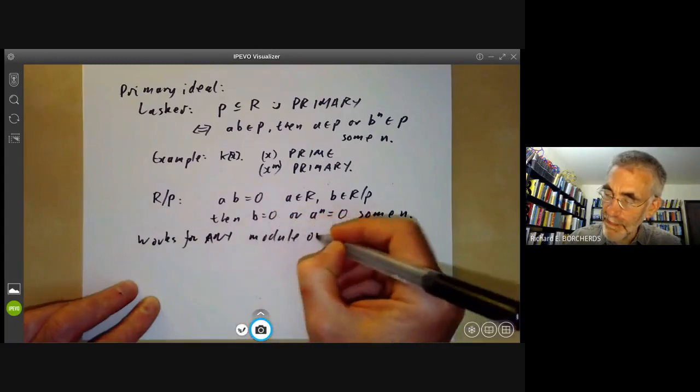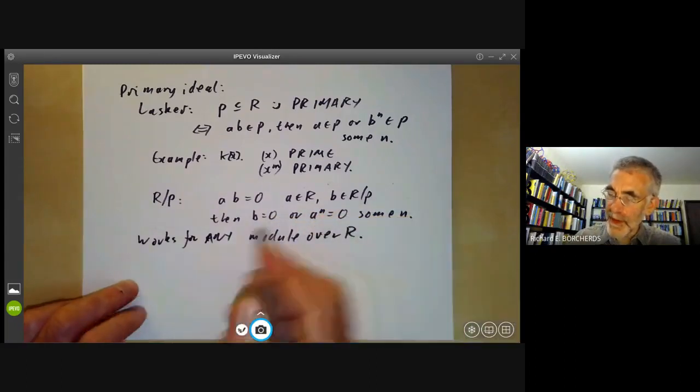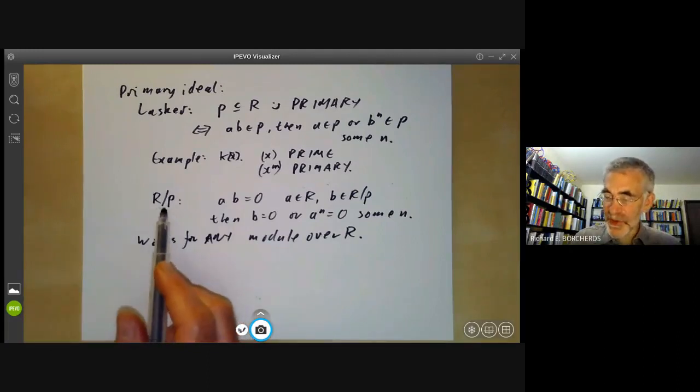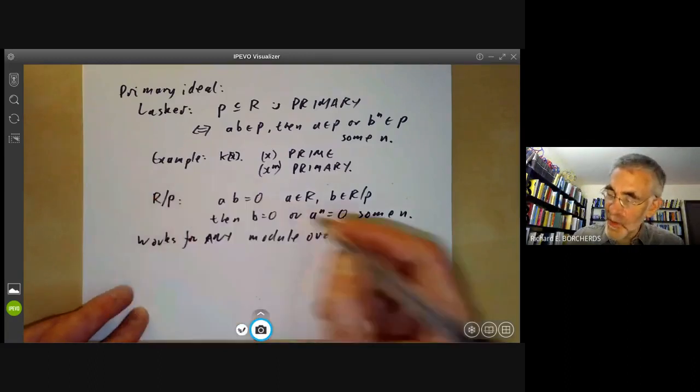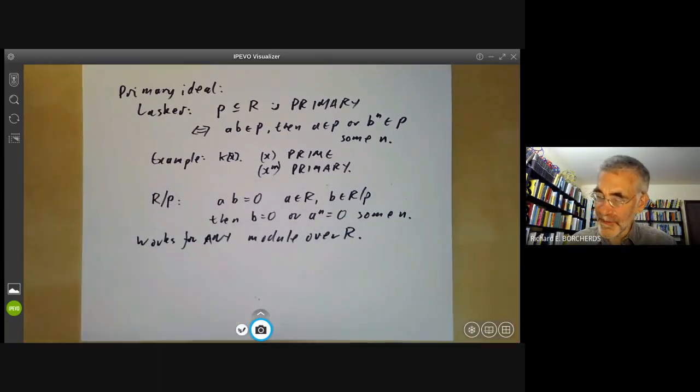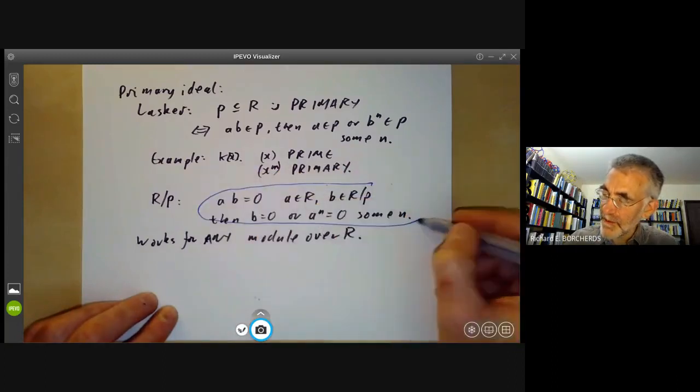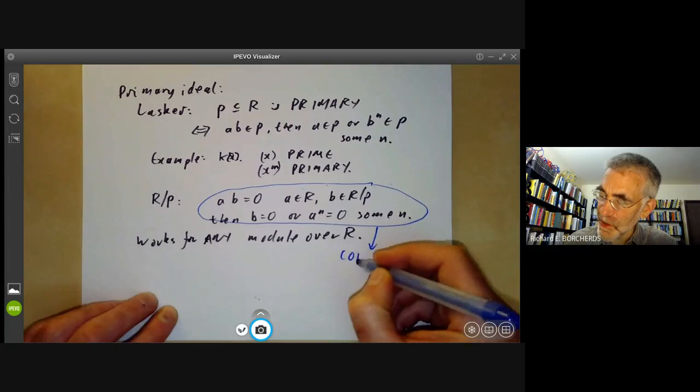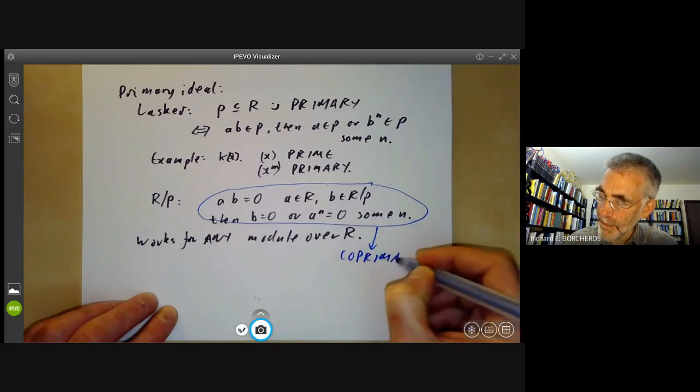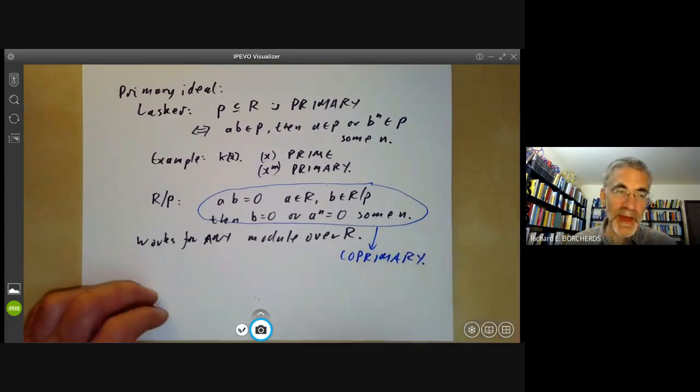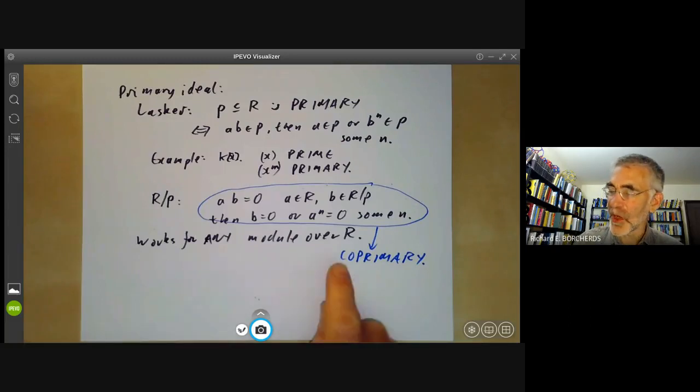So we can actually talk about modules rather than rings, and if it satisfies this condition, we say the module is co-primary. So this condition here for a module is the definition of a module being co-primary. Unfortunately, mathematical notation has got a bit messed up because co-primary is really the important concept and primary is sort of more or less a special case of it.